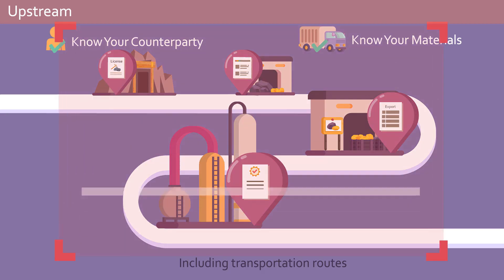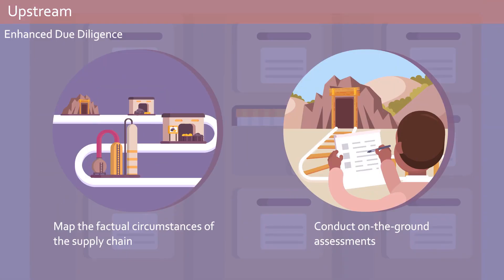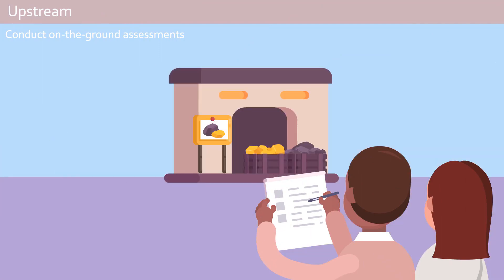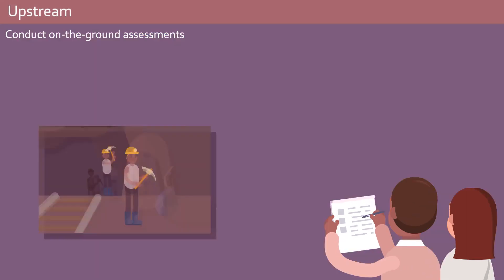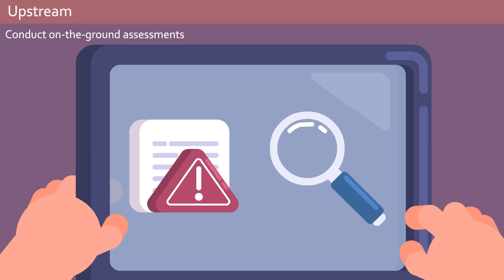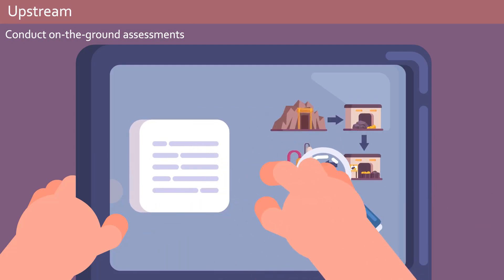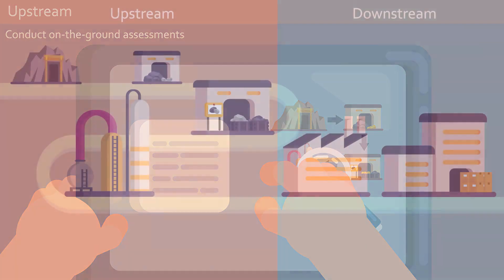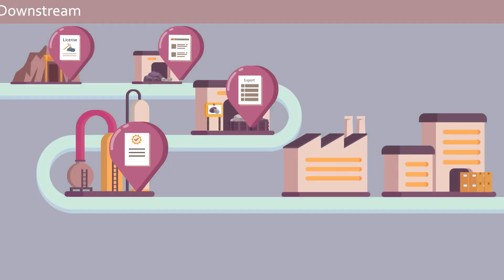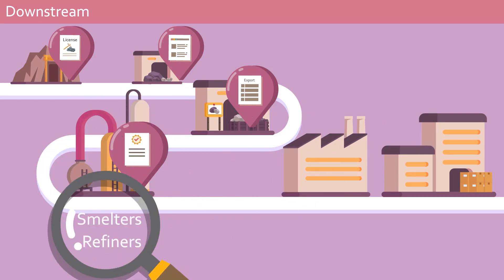This allows you to trace the shipment back to its point of origin. Then your assessment team will conduct on-the-ground assessments of every supply chain actor. They'll also visit key stakeholders to get the full picture of what's going on there, and report their findings to management so they can respond to any identified risks. That's a short summary of upstream due diligence. Downstream actors need to understand it so they can evaluate the due diligence of upstream suppliers.